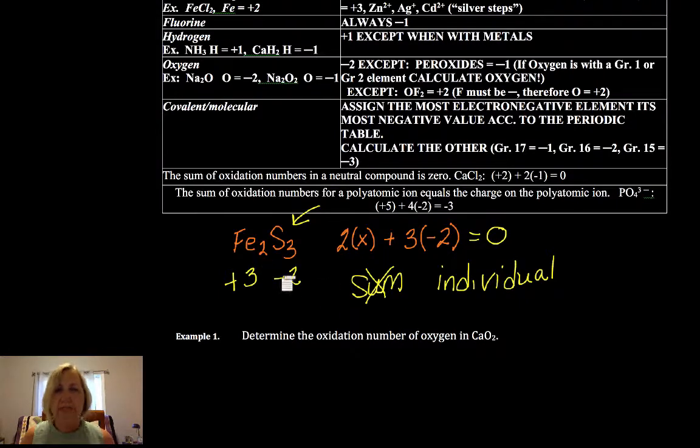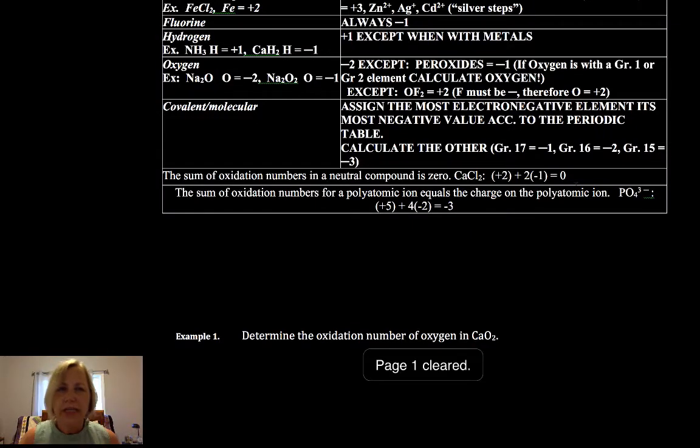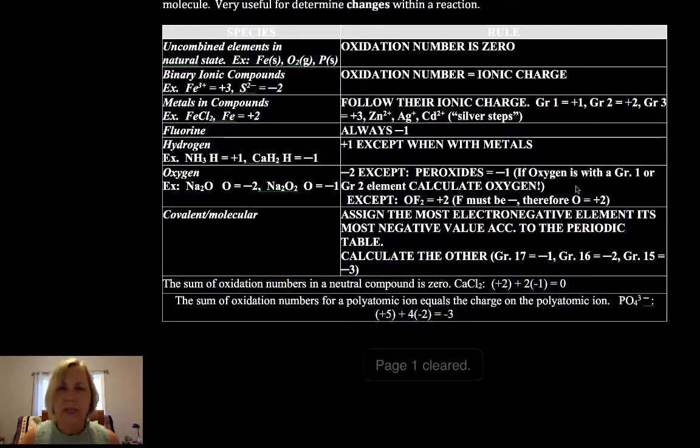For each element in that compound, so that we can track the exchange of electrons. Now, there are some other always rules that we want to memorize. So binary ionics are their ionic charge. As you're doing this, just like when we did the naming, group 1 is always plus 1, and group 2 is always plus 2.